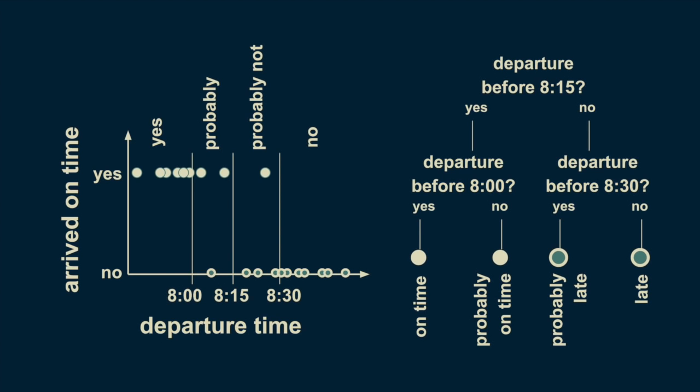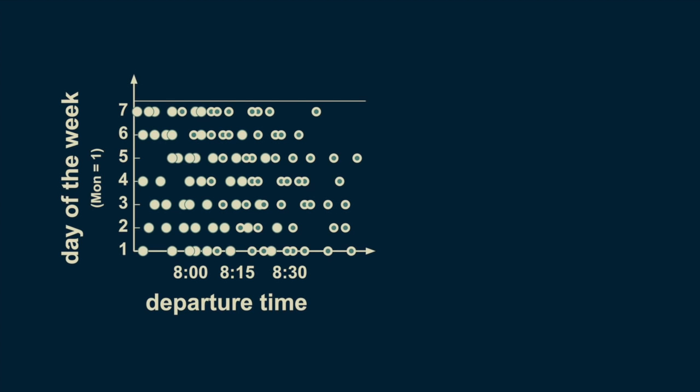We can extend this example to the case where there are two predictor variables. Consider both the departure time and the day of the week. We'll start counting at Monday equals 1, so Saturday equals 6 and Sunday equals 7. Inspecting the data, we can see that on Saturday and Sunday, the green filled donuts, representing being late, extend further to the left. This means that leaving at 8:10 is probably sufficient to get you to work on time on a weekday, but probably not on the weekend.